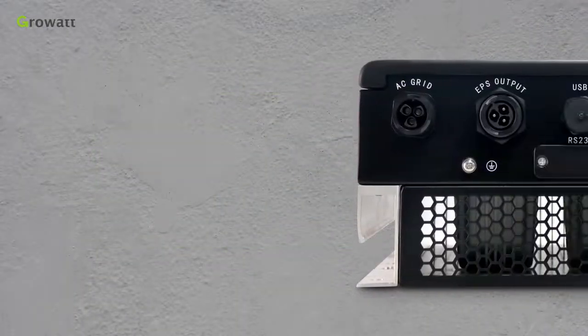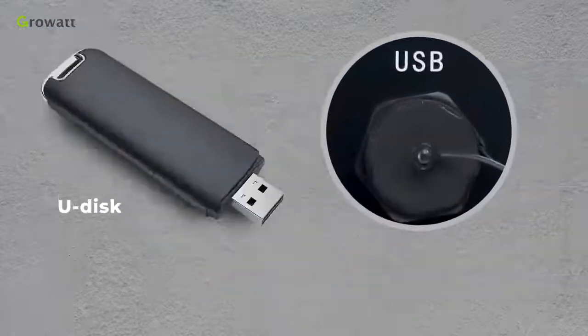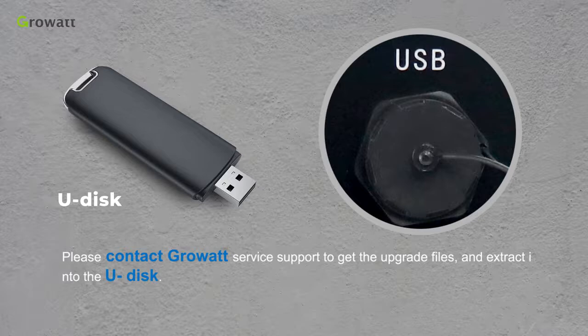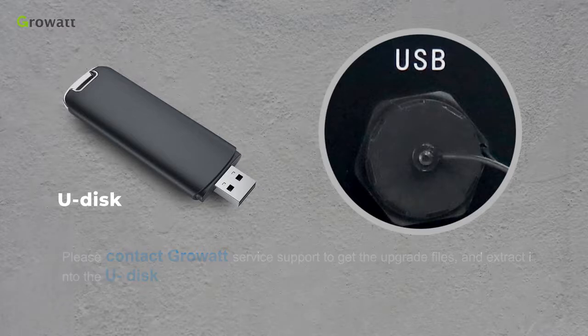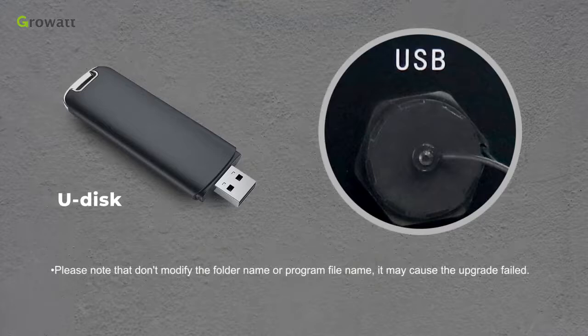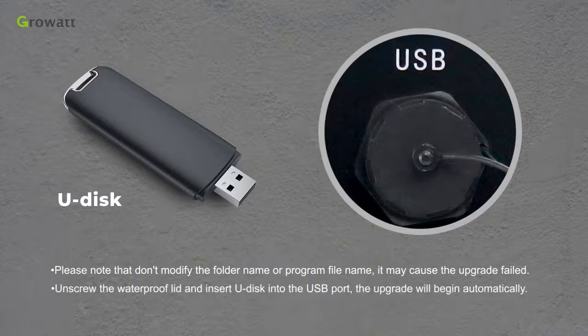User can upgrade inverter's firmware via the USB port by using a U-disc. Please contact GrowWatt server support to get the upgrade files and extract into the U-disc. Please note that don't modify the folder name or program file name. It may cause the upgrade failed. Unscrew the waterproof lid and insert U-disc into the USB port. The upgrade will begin automatically.